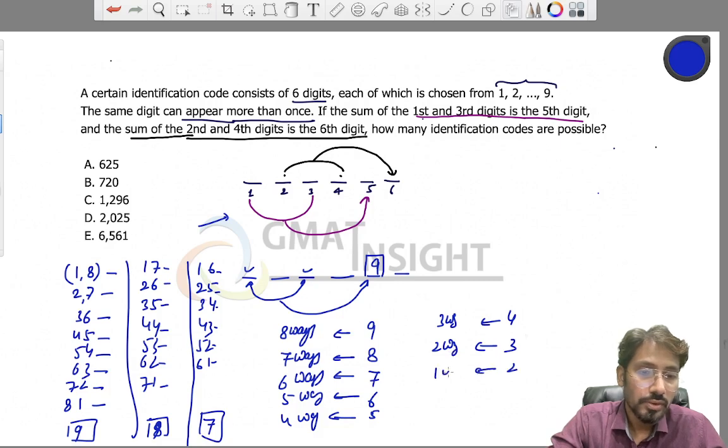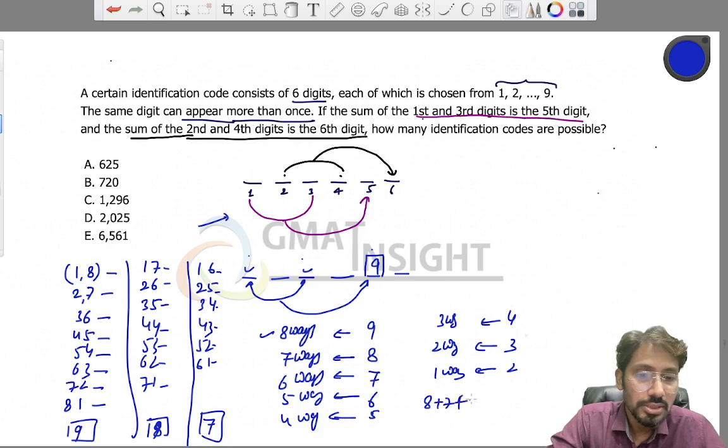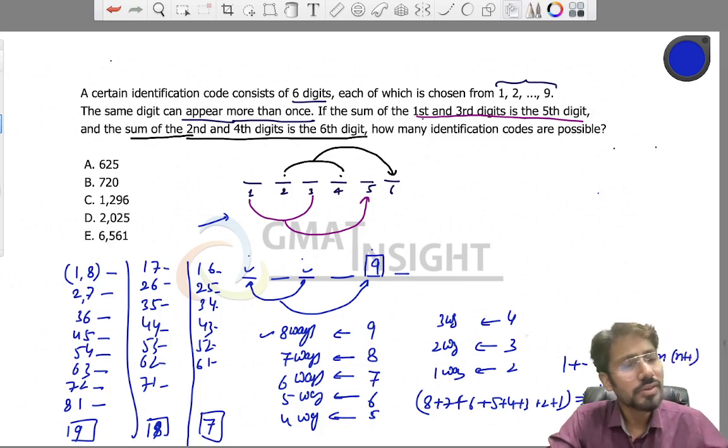In how many ways can I fill these three places? The answer is 8 + 7 + 6 + 5 + 4 + 3 + 2 + 1. There's a formula: sum of 1 to n is given by (1/2) × n × (n+1), which gives you 36. So these three places can be filled in 36 ways.